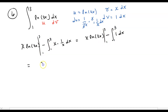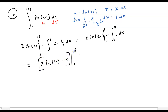So what we get as our final answer is x times the natural log of 3x minus x, all evaluated from 1 to 3. Taking for granted that you have a calculator in front of you, you end up with something like 3.49.